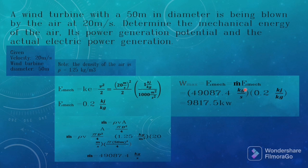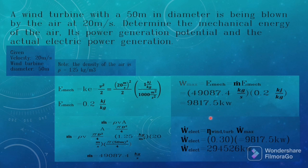The power generation potential equals mass flow rate multiplied by mechanical energy: 49,087.4 kg/s × 0.2 kJ/kg equals 9,817.5 kilowatts.